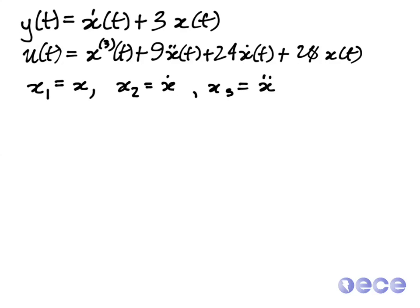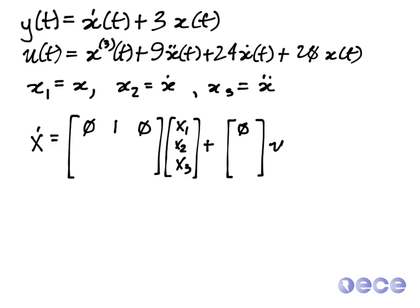So in fact, x₁ dot and x dot are the same thing here. So now I can write x dot is equal to 0 1 0 times x₁, x₂, x₃. That is, x₁ dot is equal to x₂, and we see that here. X₁ dot is equal to x₂ plus 0 times u. X₂ dot is equal to x₃ plus 0u.